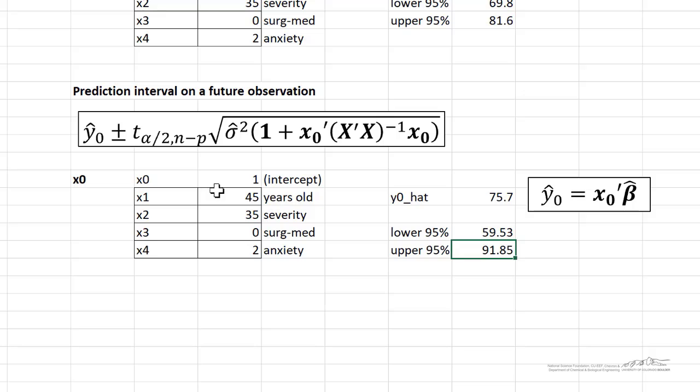The nice thing about Excel is you can just automatically change these. So maybe we had somebody who's 60 years old. Maybe they had a more severe illness. Maybe they were a medical patient. Maybe they have a lot of anxiety. And so then we could predict what the satisfaction of that patient would be.